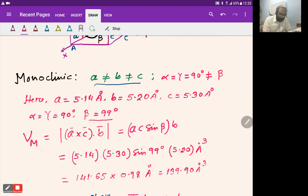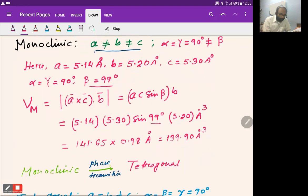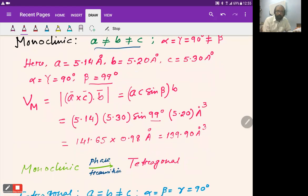Therefore, the volume of monoclinic structure is given by (a × c) · b = a·c·sin(β)·b. With β = 99°, putting those values we get Vm (volume of monoclinic structure) = 139.90 Ų.